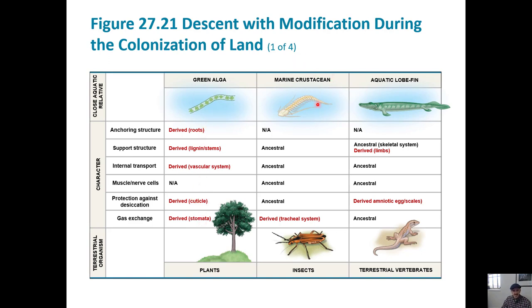Crustaceans, by contrast, already had their support structure — their exoskeleton — from their aquatic ancestors. Their internal transport system, open circulatory system, muscles, nerves, and protection against drying out were all ancestral traits. The one thing they evolved new when coming out of the water was getting rid of gills and developing a new way of breathing: the tracheal system.